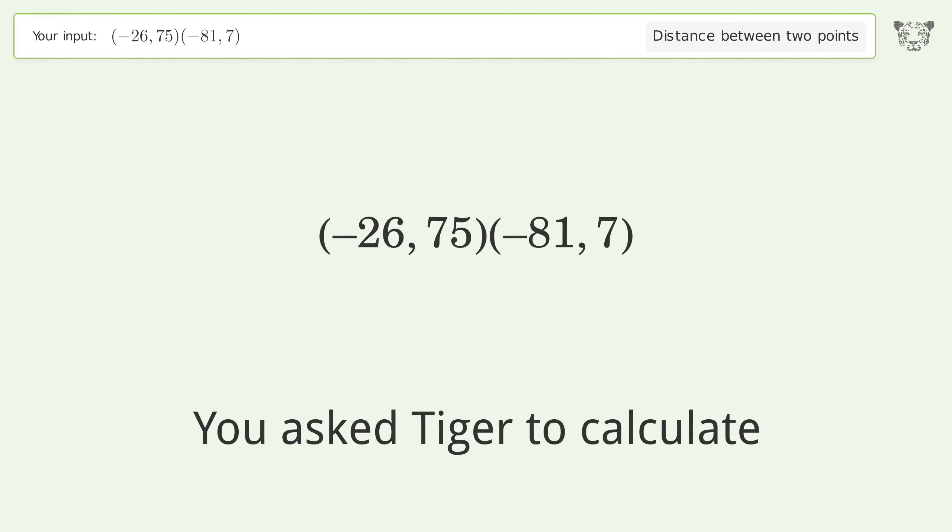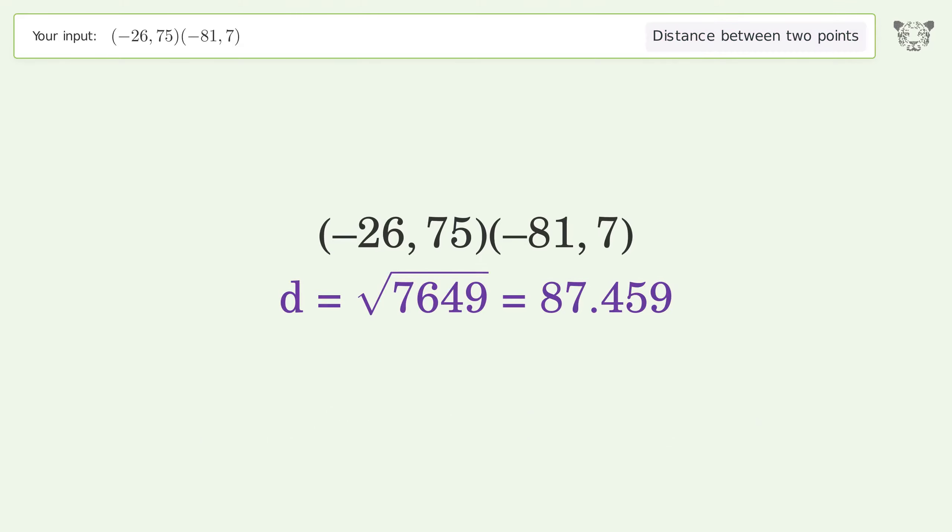You asked Tiger to calculate this, which deals with the distance between two points. The distance between the two points is the square root of 7649, or 87.459.